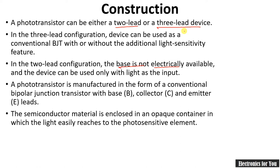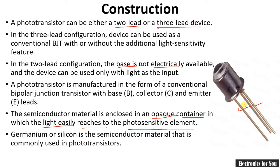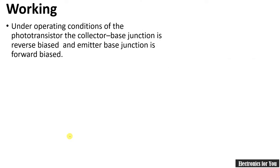A semiconductor material is enclosed in an opaque container in which light easily reaches the photosensitive element. This is a photograph of a photo transistor — it can have three terminals or two terminals. Germanium and silicon are the semiconductor materials commonly used in photo transistors.